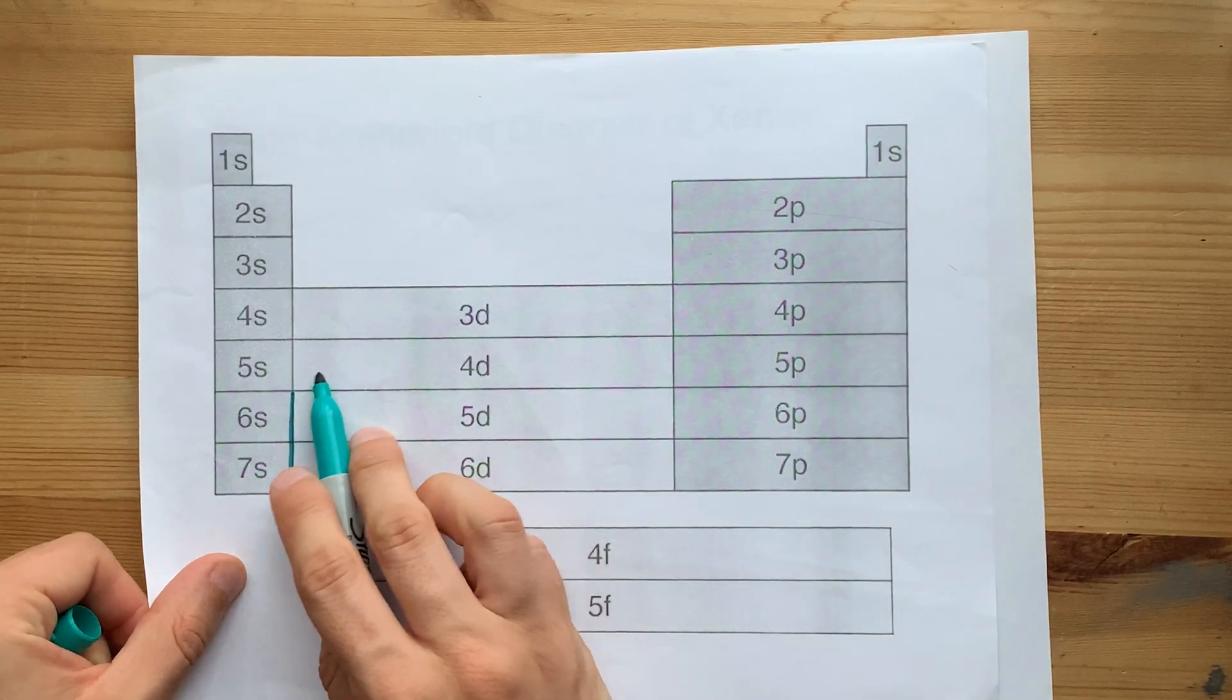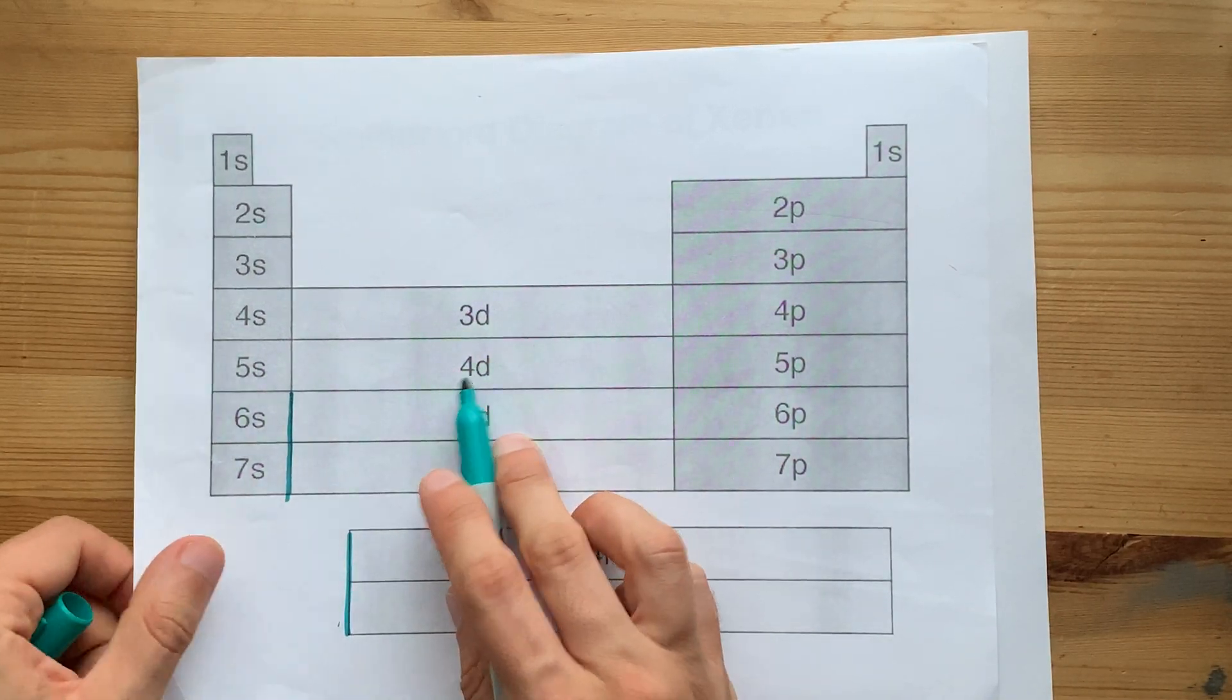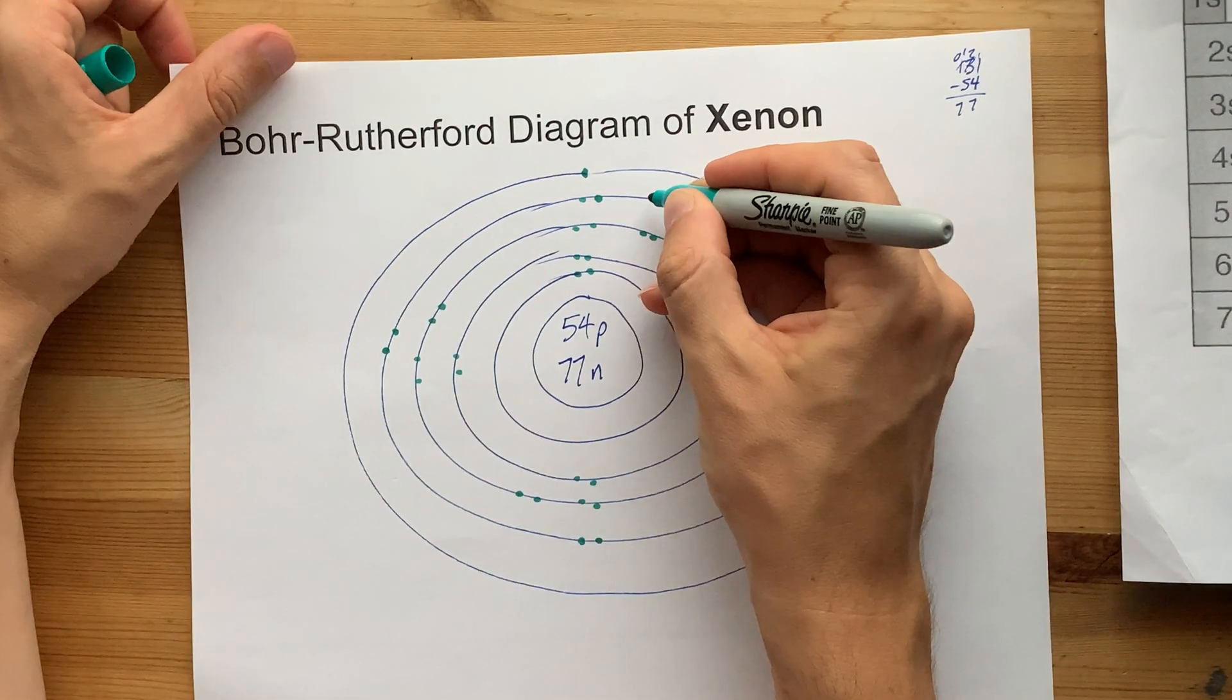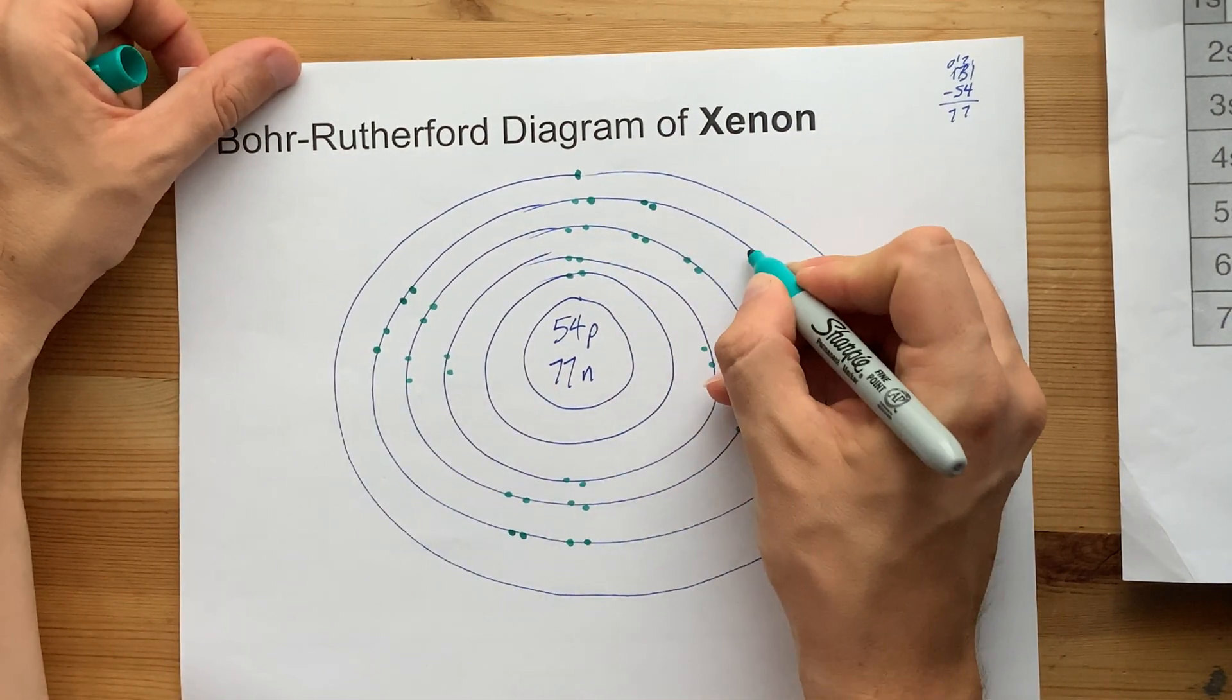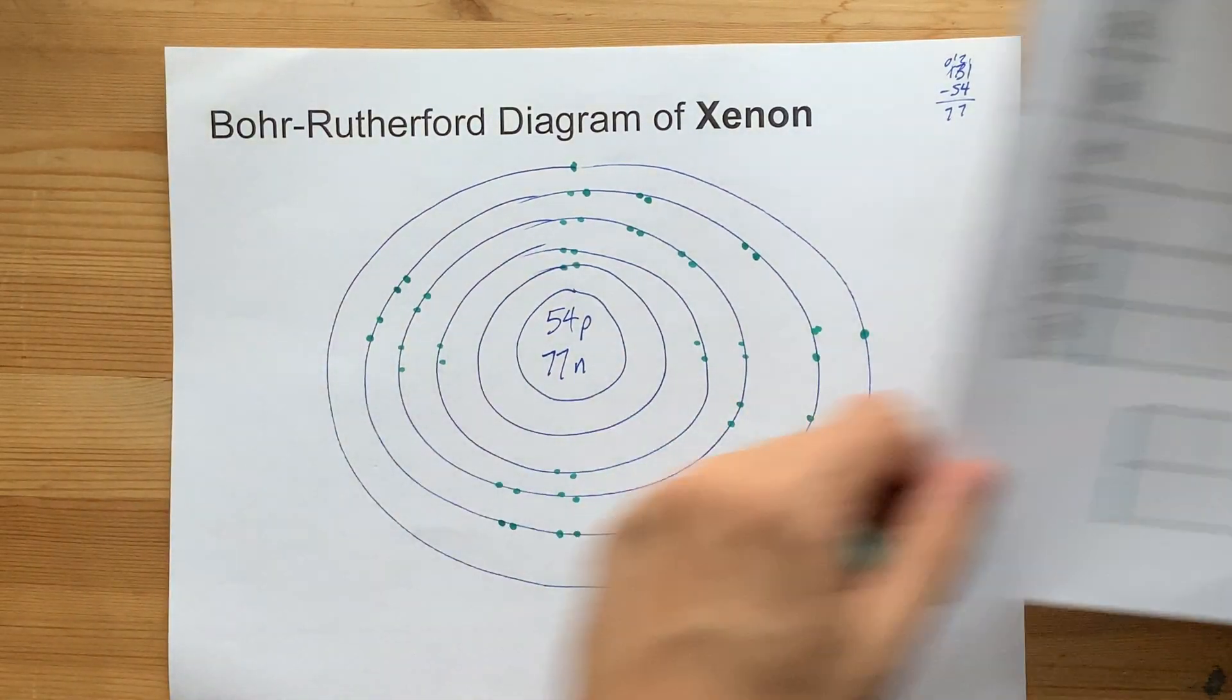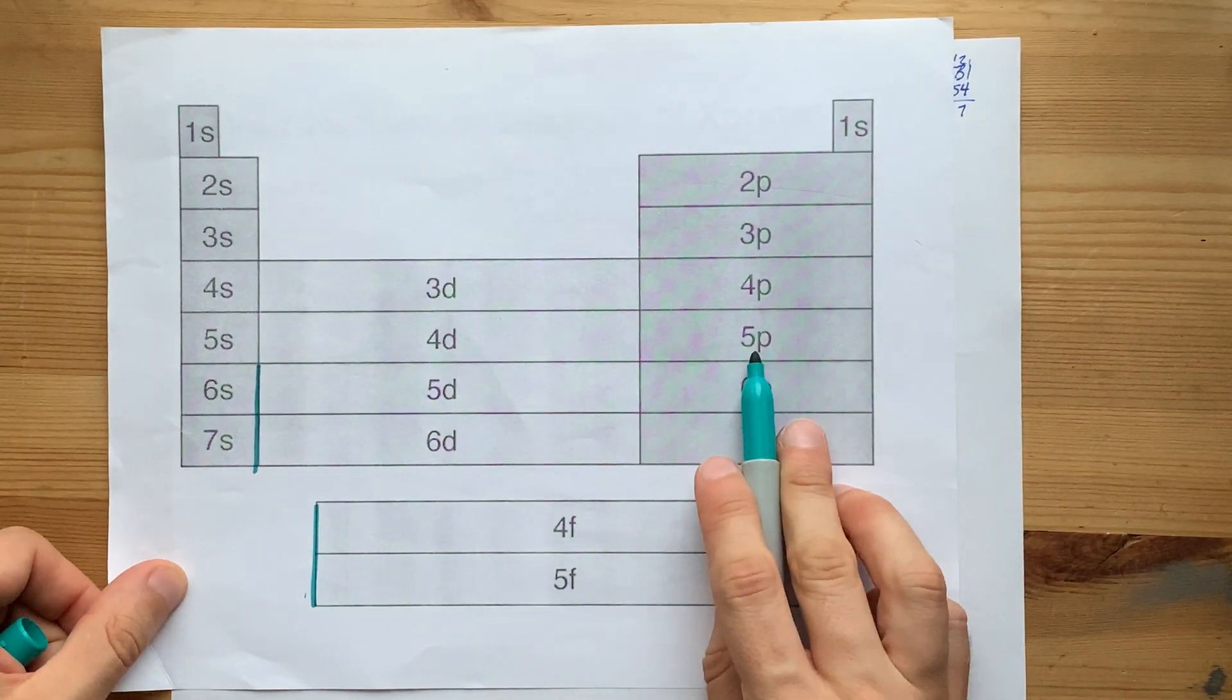Again, xenon is here, so I have to put an extra 10 electrons in the fourth shell. 1, 2, 3, 4, 5, 6, 7, 8, 9, 10. All right, now we go to the fifth shell again.